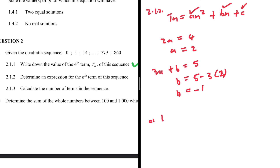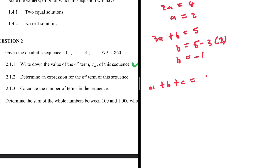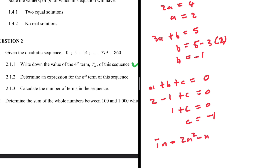Then a + b + c should equal the first term, which is 0. So 2 minus 1 plus c = 0, giving us 1 + c = 0, so c = -1. Therefore tn = 2n² - n - 1. That is 2.1.2.